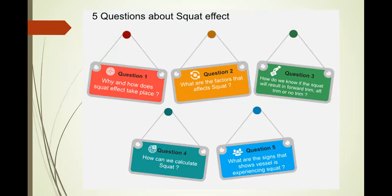What are the signs that a vessel is experiencing squat? Reduced draft and reduced speed. Squat in open waters formula: block coefficient times velocity squared divided by 100. Squat in confined or restricted waters: block coefficient times velocity squared divided by 50.